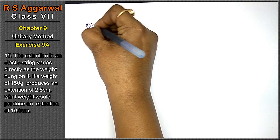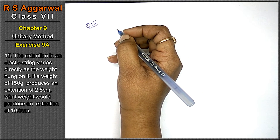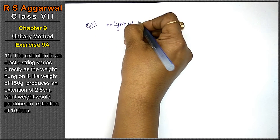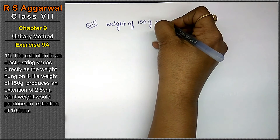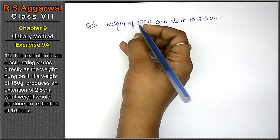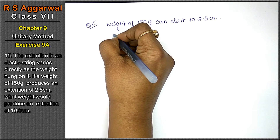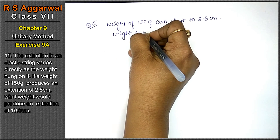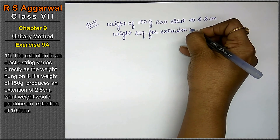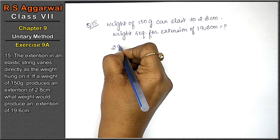Let's do question number 15 of Unitary Method, exercise 9a. The extension in an elastic string varies directly as the weight hung on it. If a weight of 150 grams produces an extension of 2.8 cm, then how much weight is required to produce an extension of 19.6 cm? We need to find the weight required for an extension of 19.6 cm.